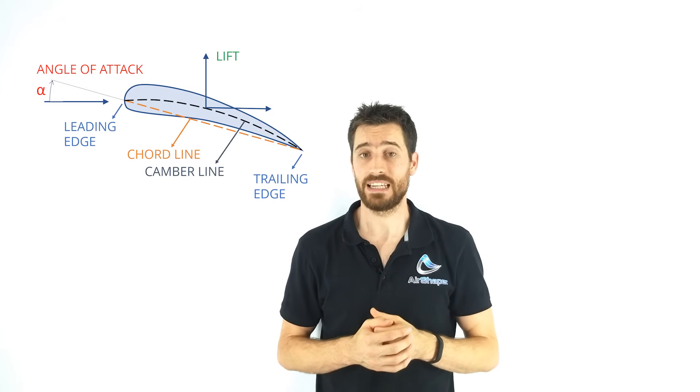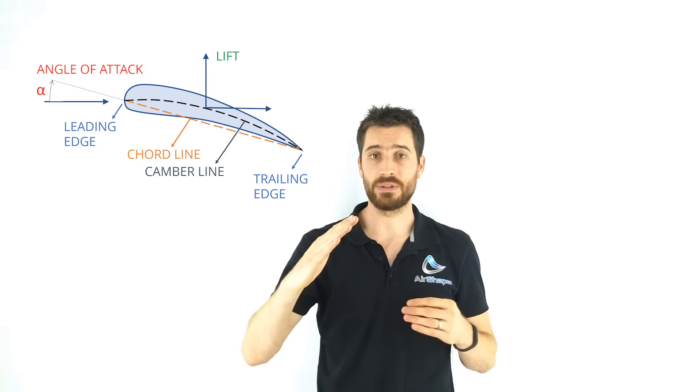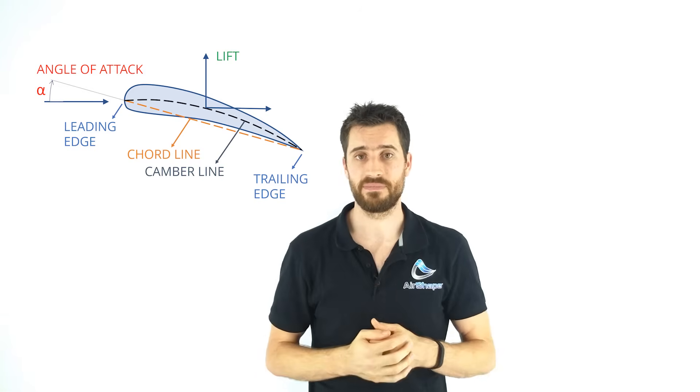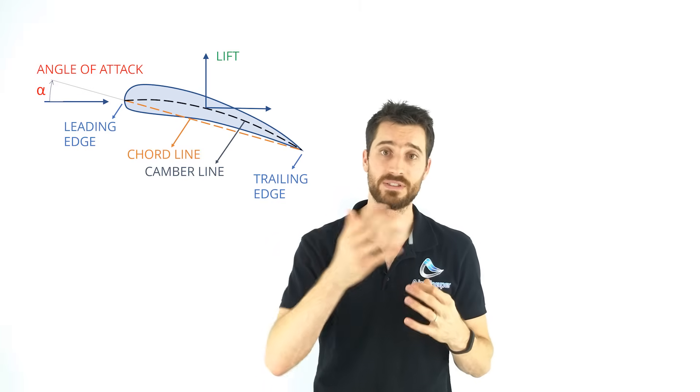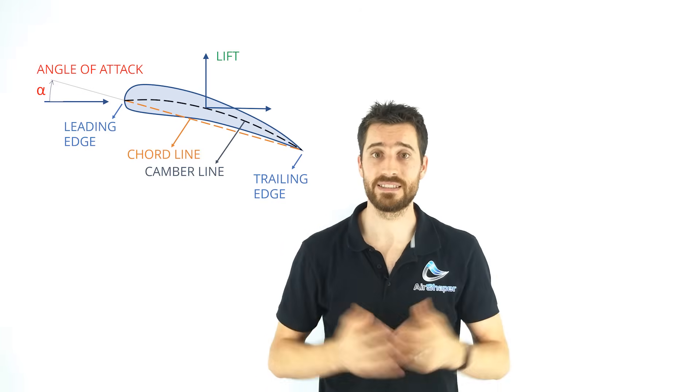The angle of attack is the angle between the cord of the airfoil and the relative wind vector. And the relative wind vector is typically a combination of the velocity of the drone itself and the wind that exists in the atmosphere.